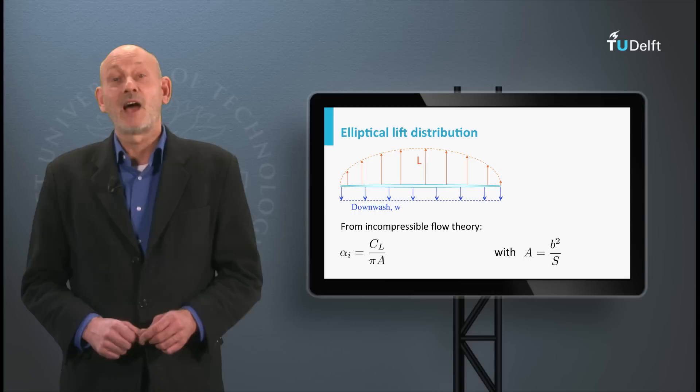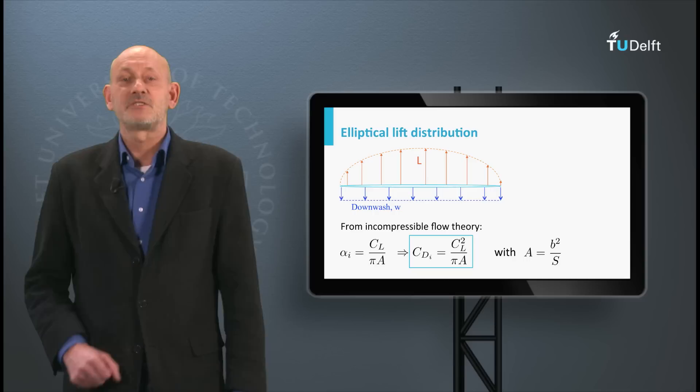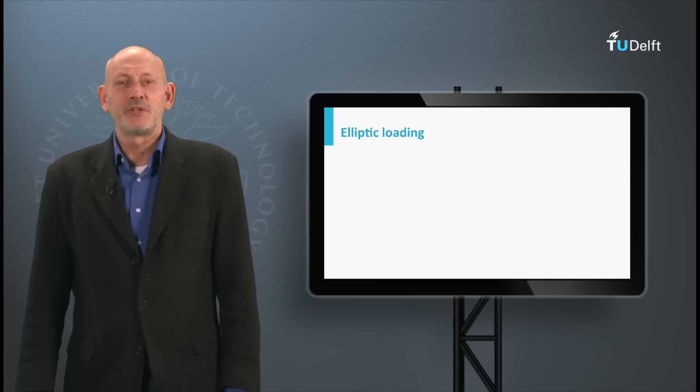Since we found that Di is L times alpha i, we may write Cdi is CL times alpha i. With the expression for the induced angle we find Cdi is CL squared divided by pi A.